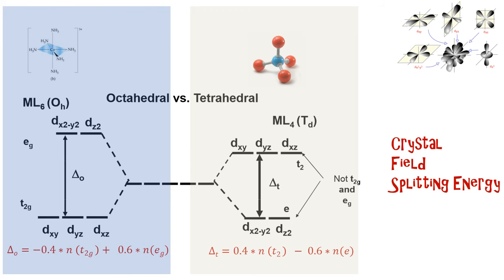In compounds with tetrahedral geometry, the ligands with lone pairs approach the central metal ion at an angle of about 45 degrees to the principal axis. This causes more repulsion in the dxy, dyz, and dxz orbitals, which are therefore placed at higher energy levels. Electron pairing first happens in these higher levels for tetrahedral complexes, and then occurs in the dx²-y² and dz² orbitals.